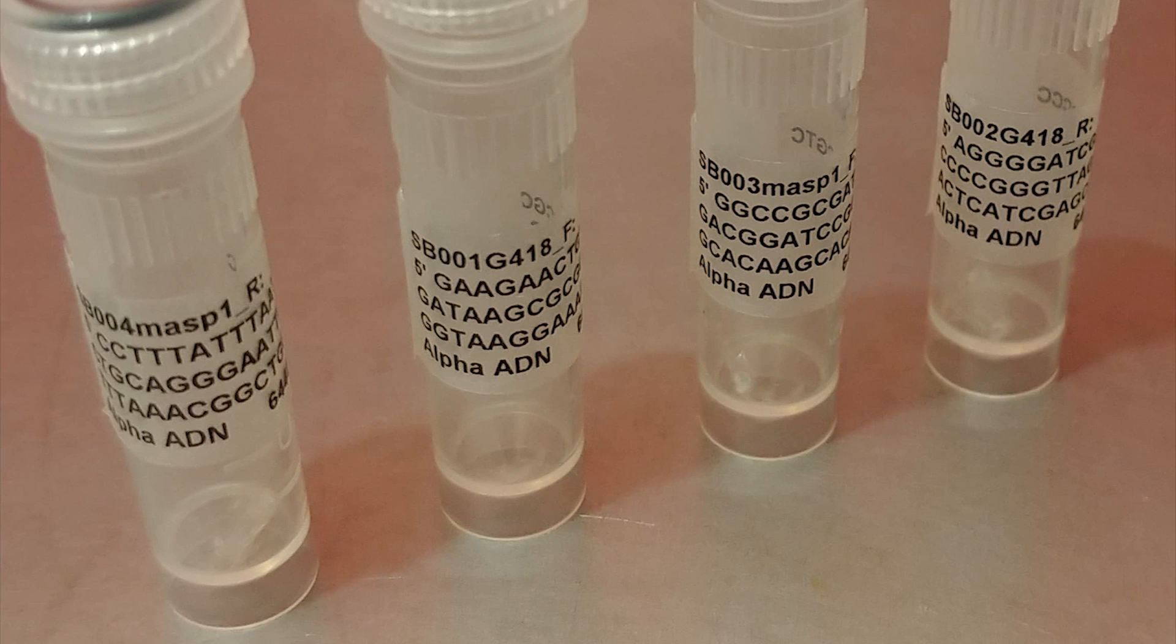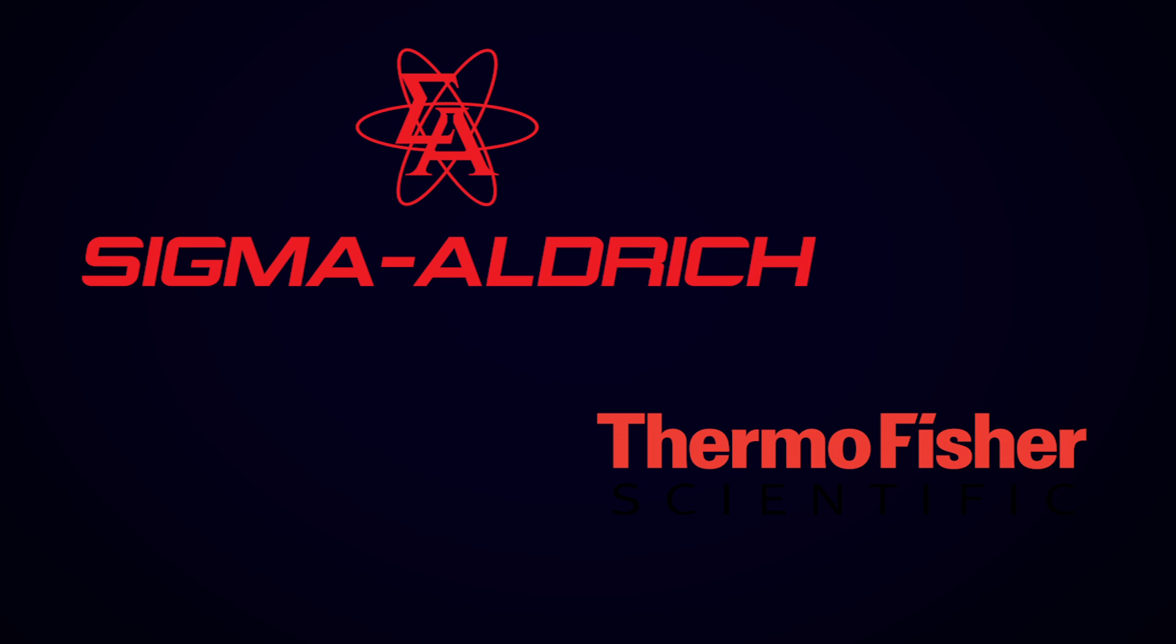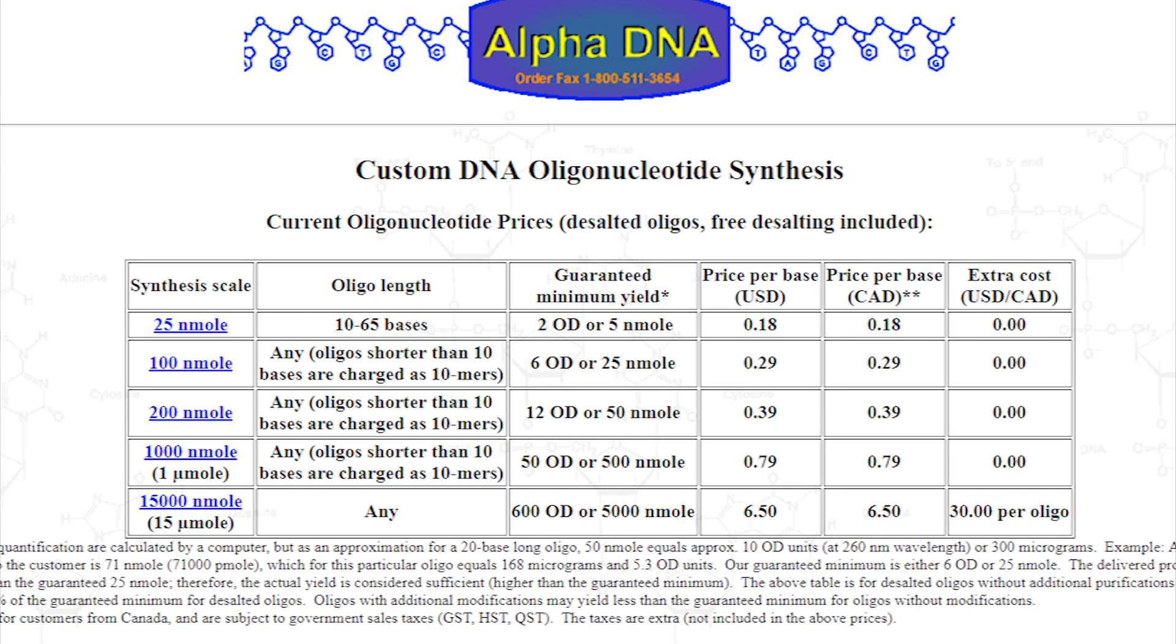Now for most PCR reactions this is where it ends. You can now take the primers we designed and send them to a DNA synthesis company and they'll chemically synthesize them for you. In our case we used a company called AlphaDNA, but there's lots of others including Sigma-Aldrich, Thermo Fisher, and many, many more. Some will only ship to labs and universities though, so check each site to find out. AlphaDNA will ship to anyone and they're local to Montreal, which is why we chose them.